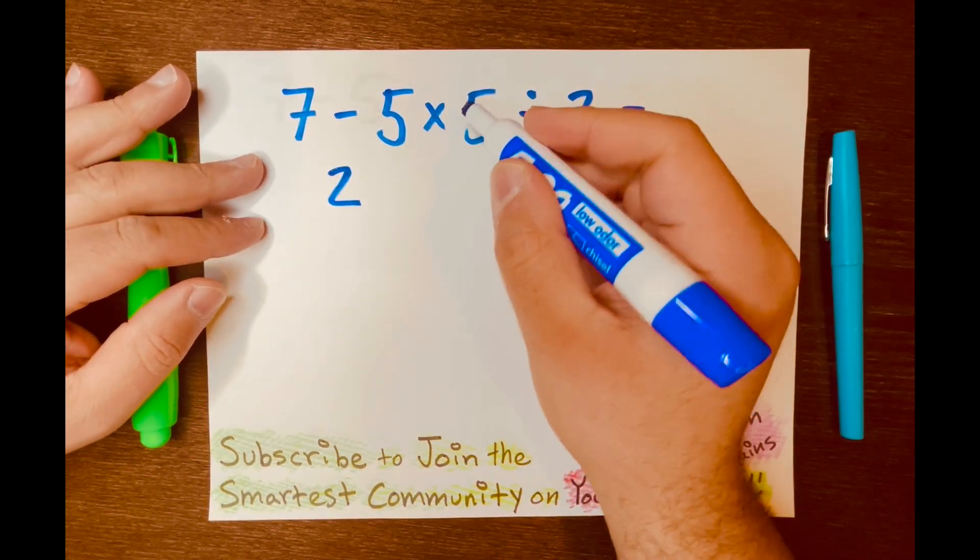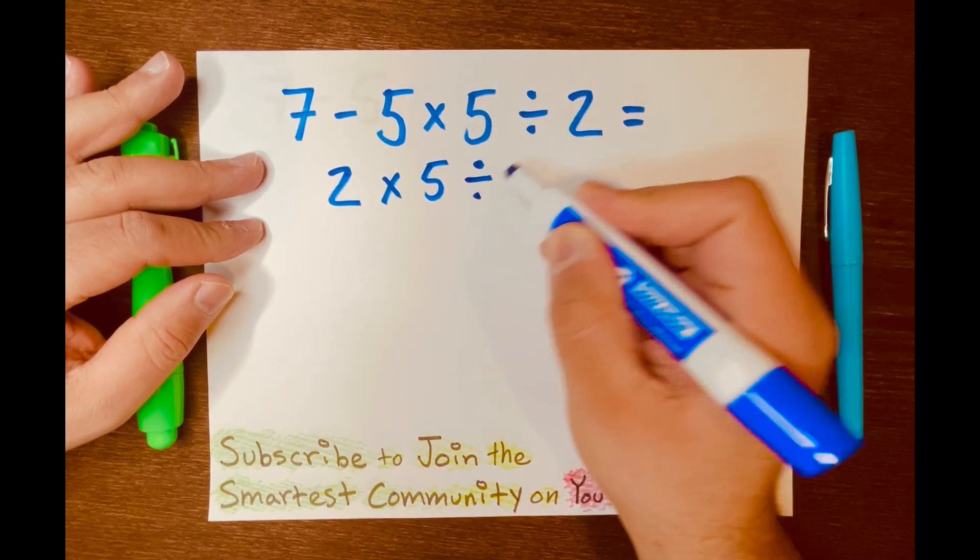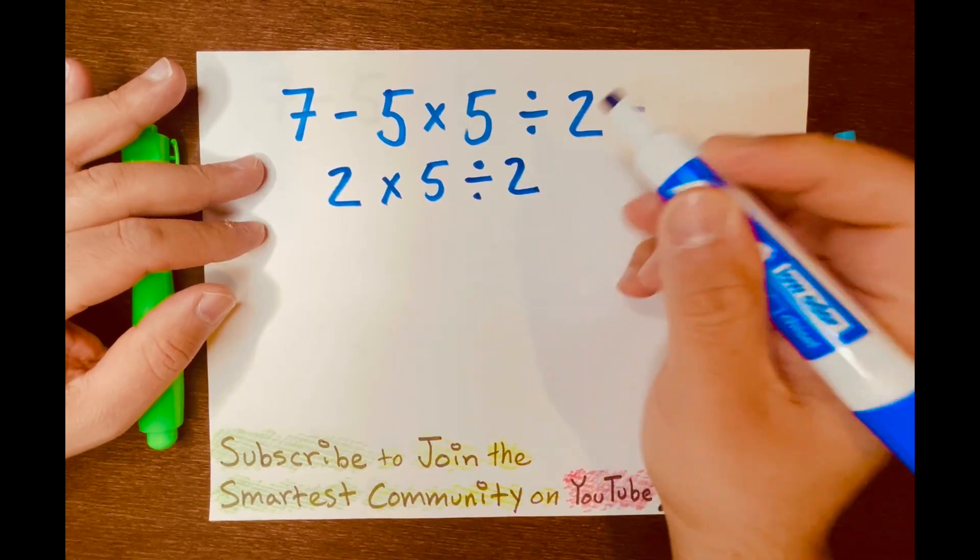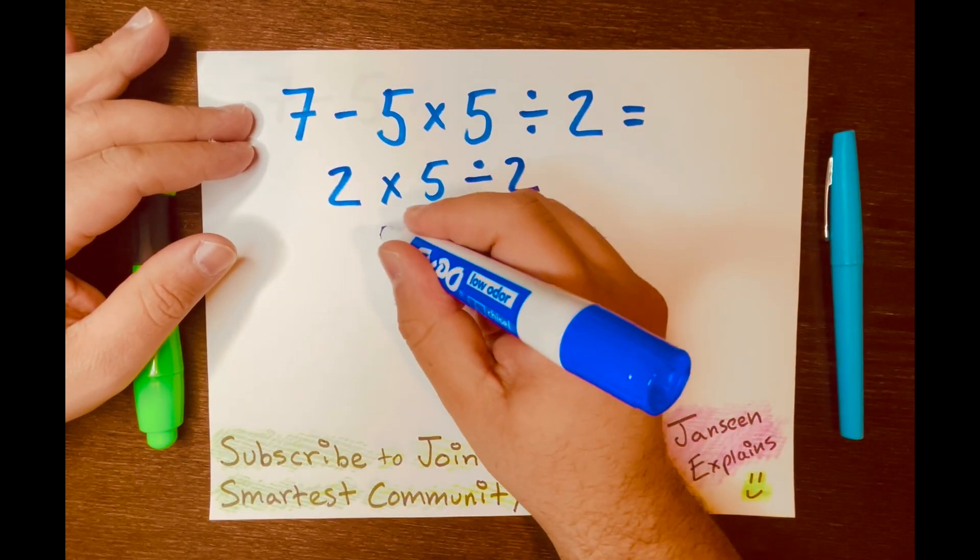So they'll write 2, bring down the times 5 down, the division symbol down, and the 2 down. Then they'll multiply 2 times 5, which equals 10.